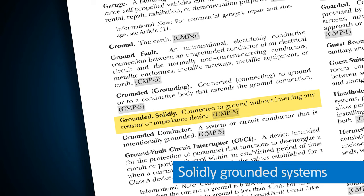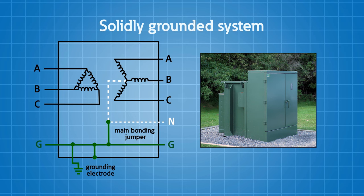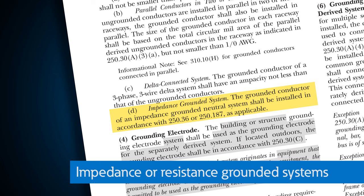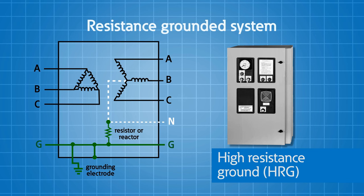Everything we've talked about so far has been about grounding and bonding of components and electrical systems, establishing that connection at the service or at our separately derived system between the grounded conductor, equipment bonding, and earth. Now we're going to talk about system grounding: solidly grounded systems versus resistance or impedance grounded systems. Solidly grounded means there's a solid connection to earth at some point in the power distribution system with no resistor or impedance inserted. Ungrounded systems have no connection to ground at all. Impedance or resistive grounded systems are connected to earth through an impedance.